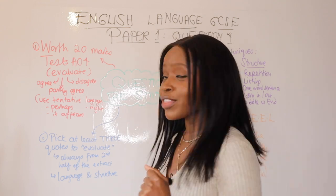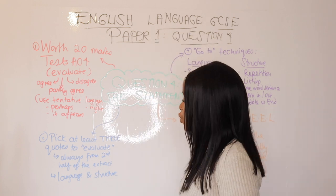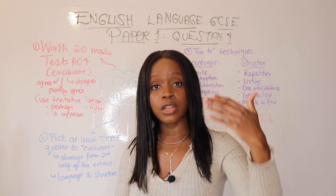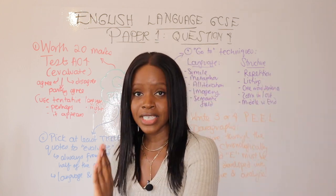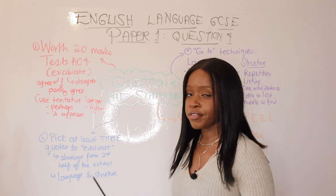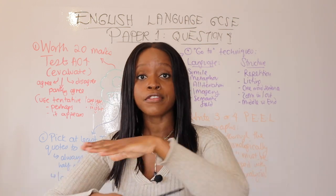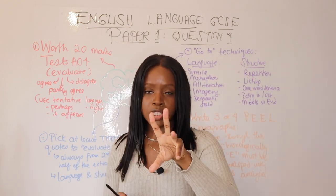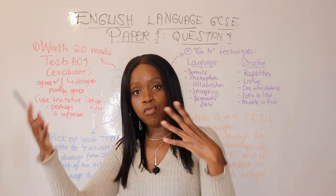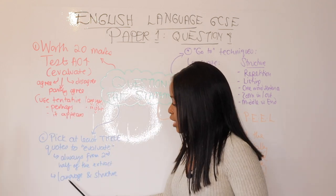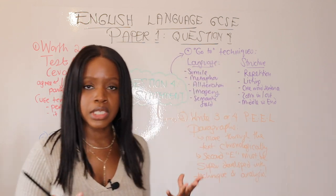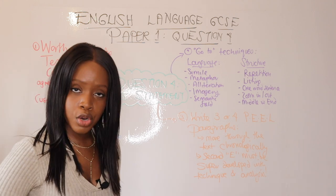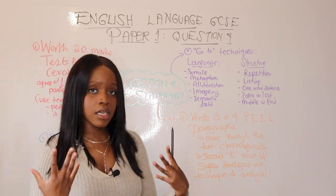Step two: try to pick at least three quotations from the extract you were given to evaluate. Make sure the quotations are not next to each other — work through the entire part of the extract. It's always from the second half of the extract to the end, not the whole source. Pick something from the middle, something closer to the end, and something else from right at the end of the passage. Make sure you reference language and structure and how they support — or don't support — the student statement.